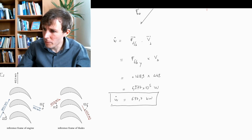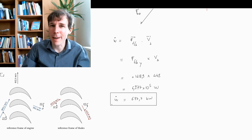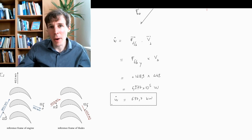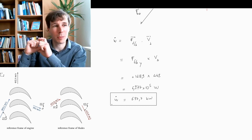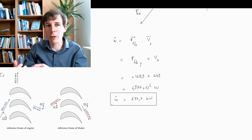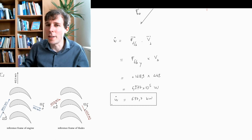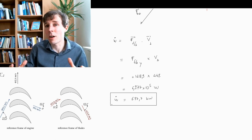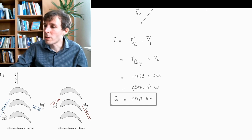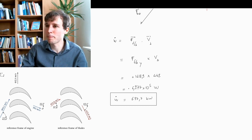How big is 627.7 kilowatts? That's a lot — around 500 horsepower, the power of a very powerful truck — and this is the power given by the flow to a single blade you could hold in your hand. Turbine blades are extremely powerful. Some of that power is given back to the compressor, and some is extracted through the shaft to the machine. Turbine engines are generally extremely powerful. This is how you use the momentum balance equation to compute force and power when things are moving.